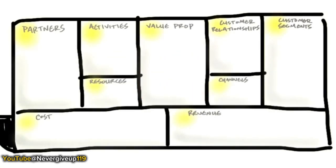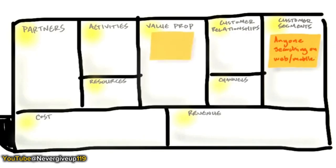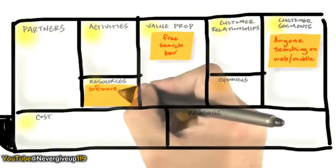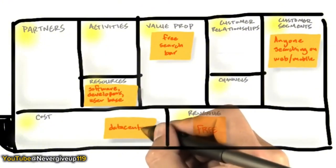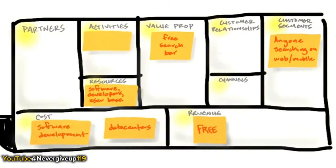Let's think about who's the customer for Google Search — it's anyone searching on the web or mobile. The product is a free search bar or free mobile app. The key resources are software, software developers, and an installed user base. The cost structure requires massive data centers and software development, and key activities are data center scale and speed. The key idea is the revenue model is free.